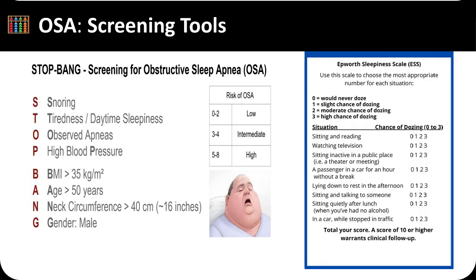Screening for OSA commonly utilizes the STOP-BANG questionnaire and the Epworth Sleepiness Scale. The STOP-BANG tool assesses eight risk factors: snoring, tiredness or daytime sleepiness, observed apneas, high blood pressure, body mass index above 35, age over 50, neck circumference greater than 40 centimeters, and male gender. Scores of 0 to 2 indicate low risk, 3 to 4 intermediate risk, and 5 to 8 high risk of OSA.